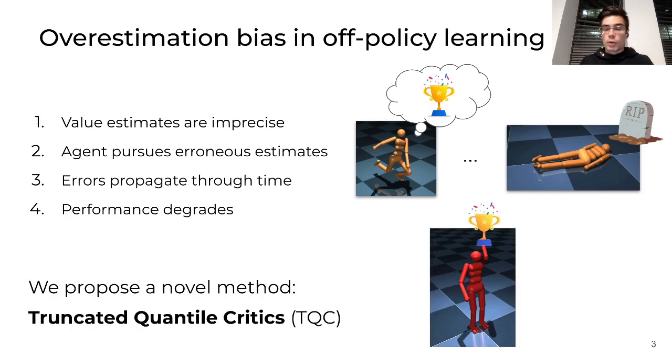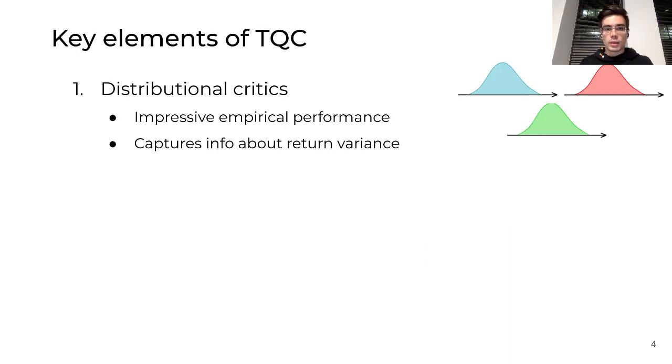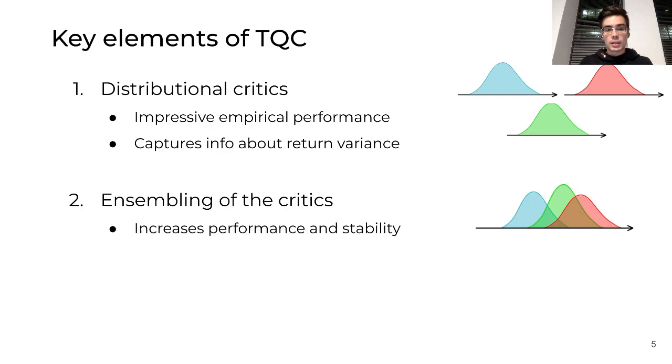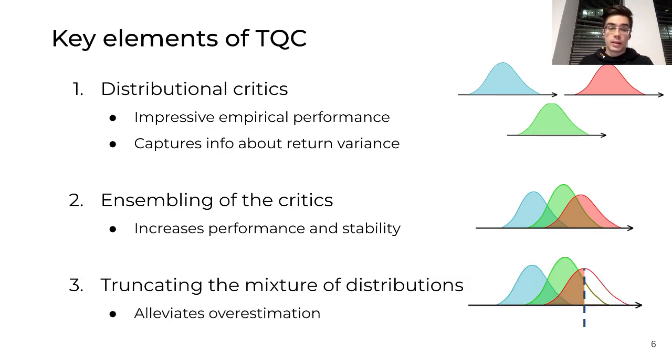Motivated by this problem, we propose a novel method, Truncated Quantile Critics or TQC. TQC combines three main elements. The first one is distributional critics. Instead of a single value, our critics output the whole distribution. Our critics try to approximate the whole distribution of returns. The second element is the ensemble of critics, which promotes stability. And the last, but the main part, is truncating the mixture of distributions. We truncate the right tail of the mixture to alleviate the overestimation bias.